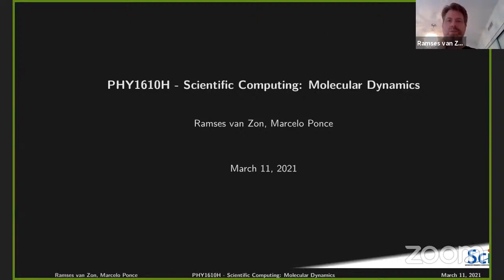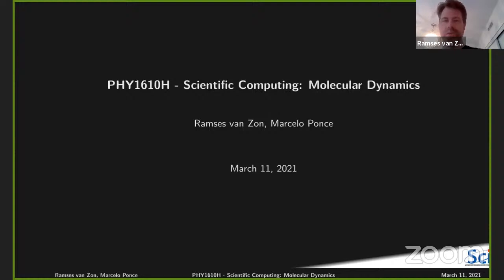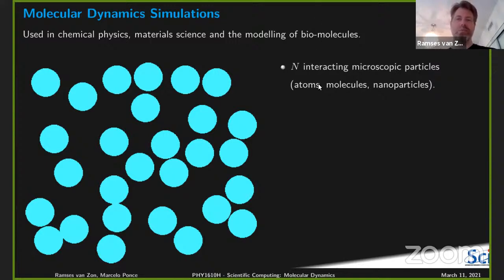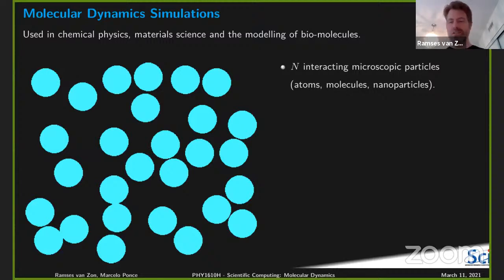Today we're going to talk about molecular dynamics. It's an application of scientific computing, a very widely used one, and we felt we couldn't leave it out of this series of lectures. But there are some funny things about it, as we will see. So first, what do I mean by molecular dynamics or molecular dynamics simulations? It's used in chemical physics, material science, modeling of biomolecules, and in a generalized form, it's also used for many-body simulations — collections of stars, etc.